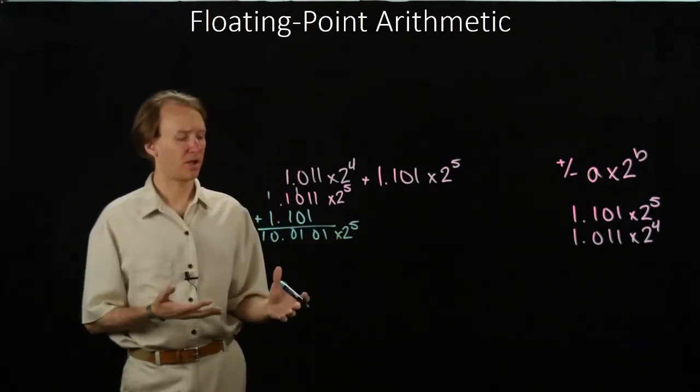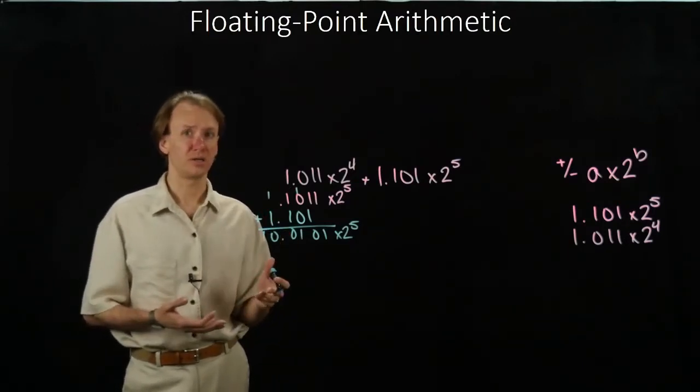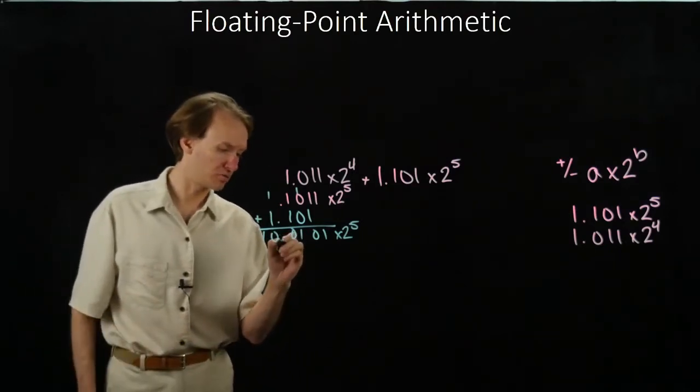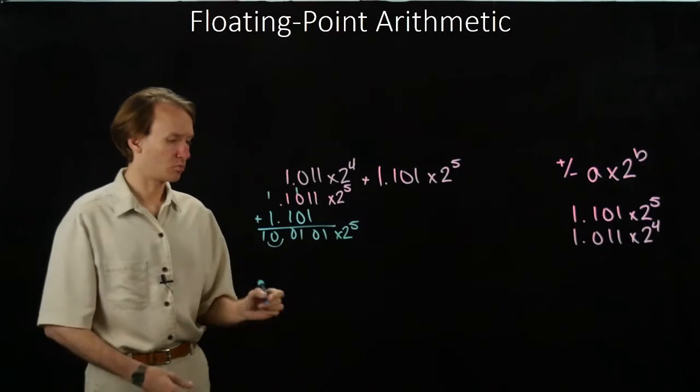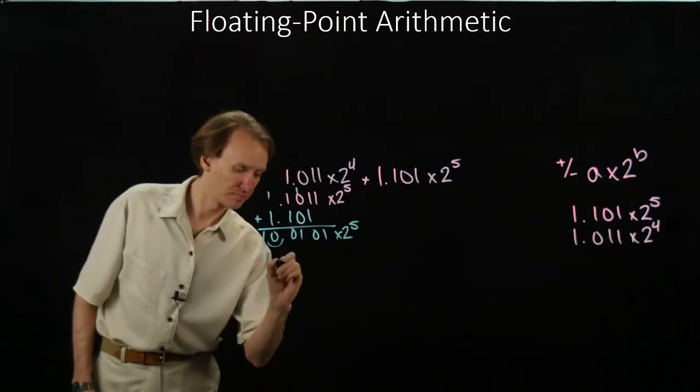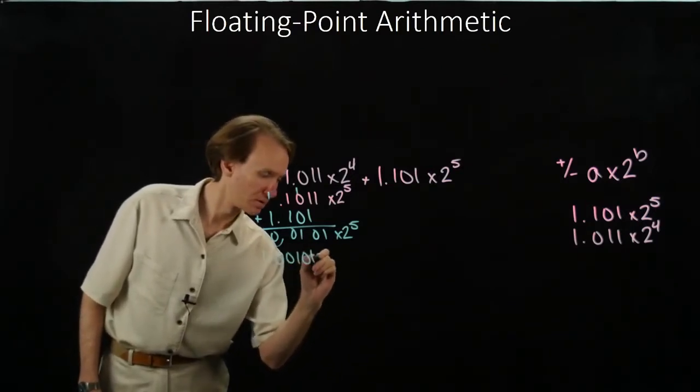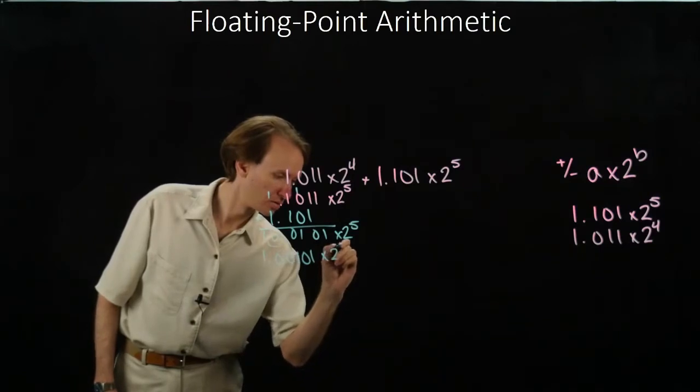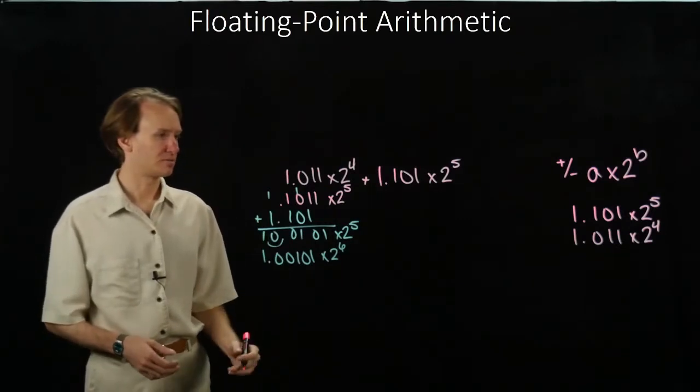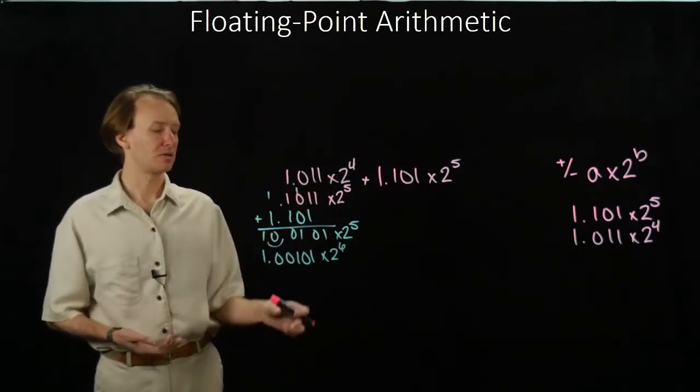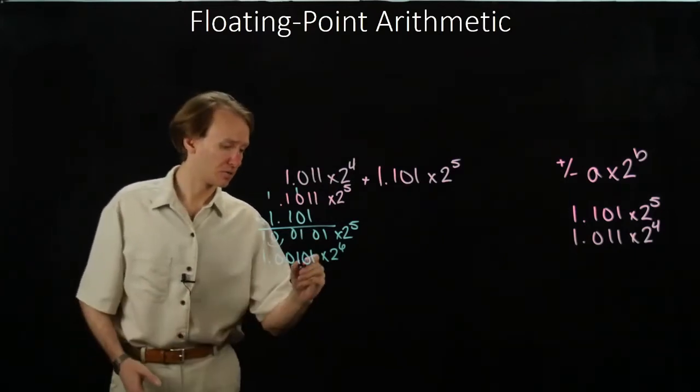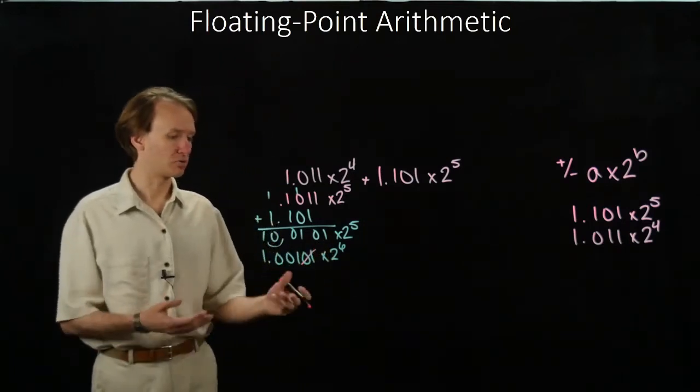So my floating point format tells me I'm only allowed to have one bit in front of the binary point, and it has to be a one. So in this case, I'm going to now shift this binary point one more place to the left, and that will allow me to increase my exponent one more time. Now I also have to recognize that I started off having three bits in my significand, so I'm only going to be allowed to have three bits in my significand when I'm done.